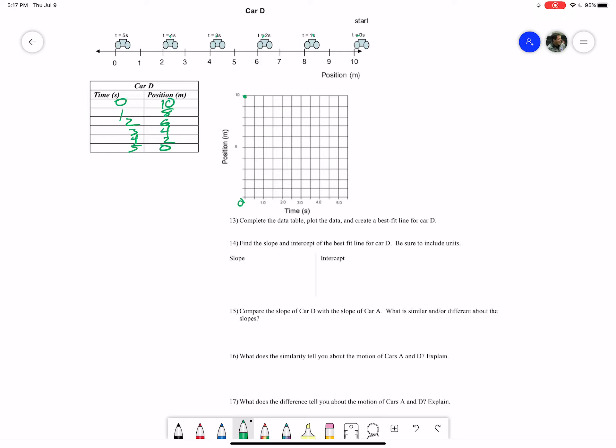Time of one second is to eight right there. Time of two seconds is to six. Three seconds is to four. Four seconds is going to be a position of two meters. And at five seconds, it's a position of zero meters.